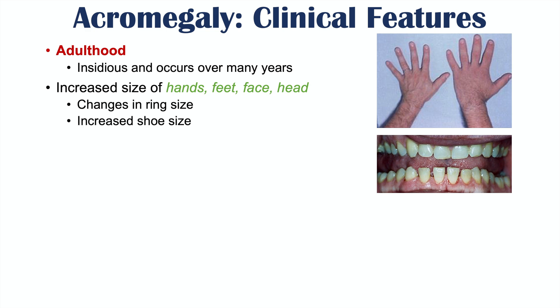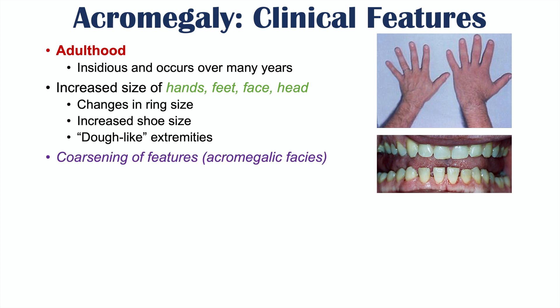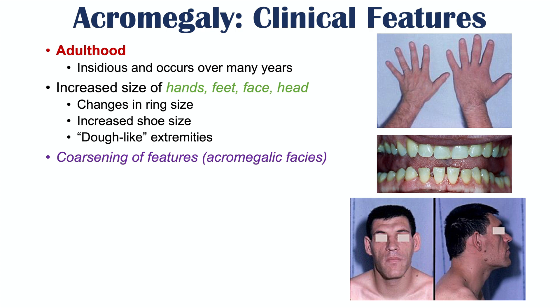Increased shoe size indicates enlarged feet. There can also be a doughy appearance to the extremities due to increased proliferation of soft tissue. Coarsening of features — known as acromegalic facies — is also seen, including enlargement of the nose, ears, and tongue. These changes are very subtle and the best way to appreciate them is to compare an old photograph from 10 to 15 years ago with the patient's current appearance.